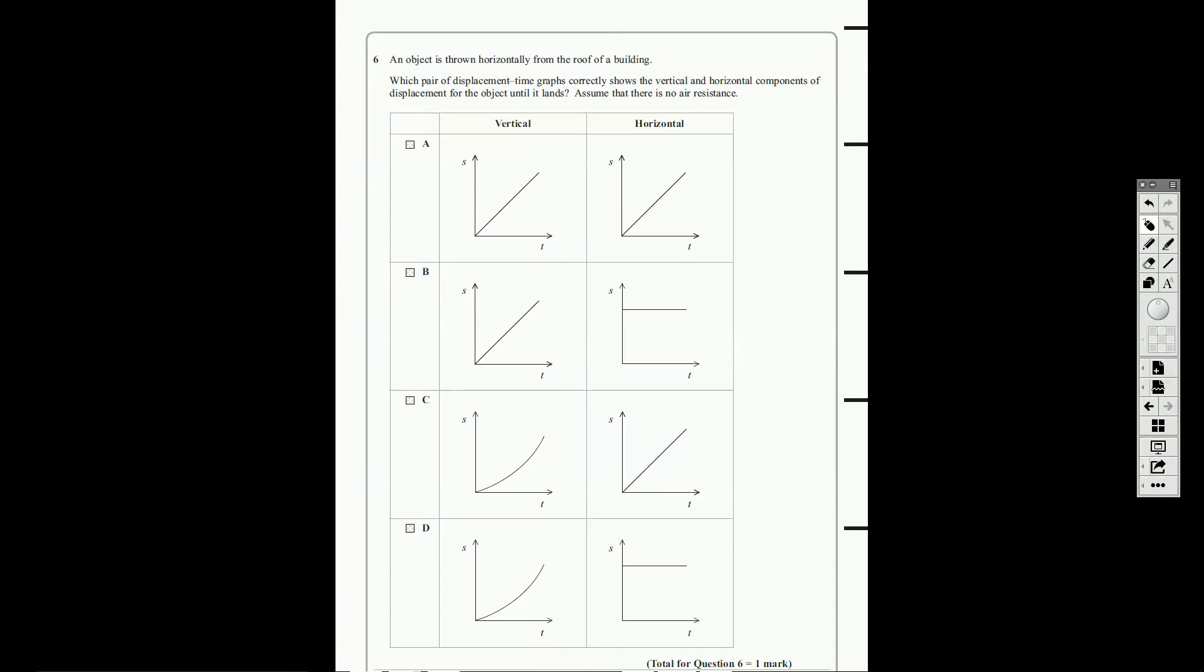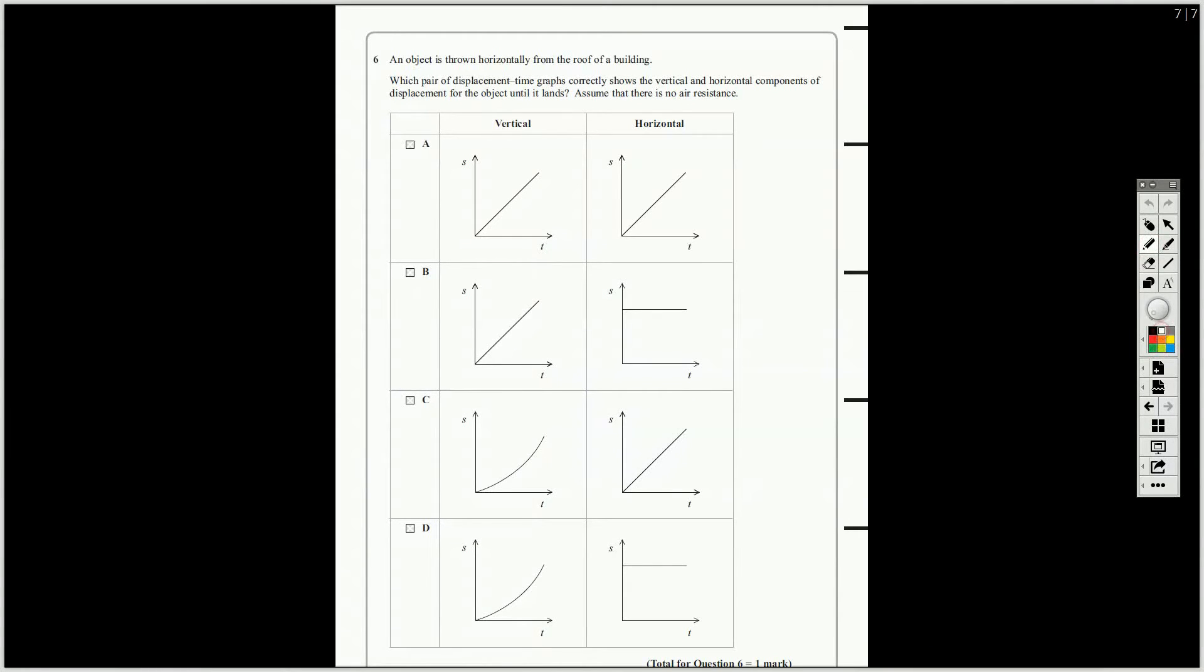So, this one combines what you know about vectors, horizontal and vertical motion being independent of one another, and also what you know and need to be able to apply about graphs. These are all displacement time graphs, we're told, S versus T, all of them, and which ones correctly show the vertical and horizontal components of the displacement for the object thrown horizontally from the roof of the building until it lands. You've probably done something like this, watching coins fall off a ruler, where one falls straight down and the other one falls in a parabola.